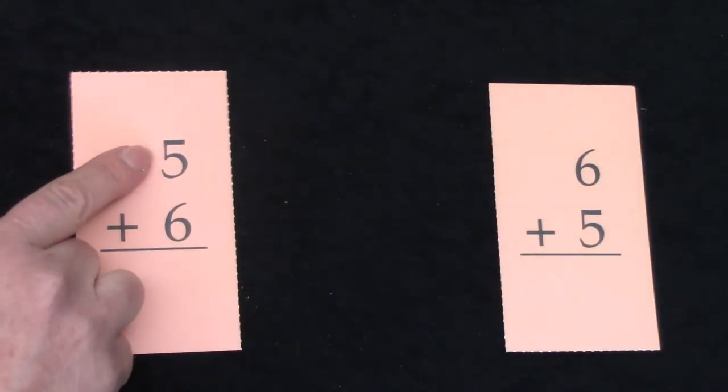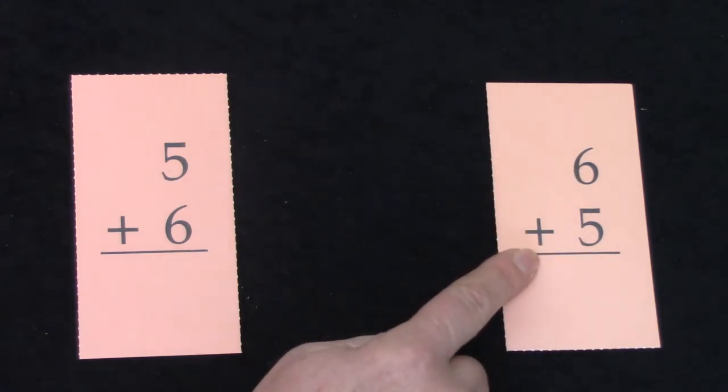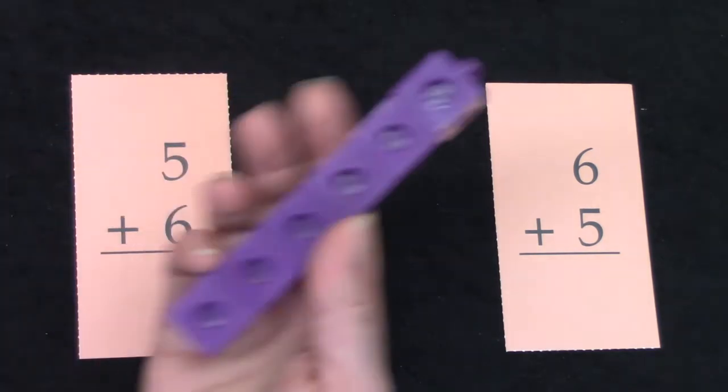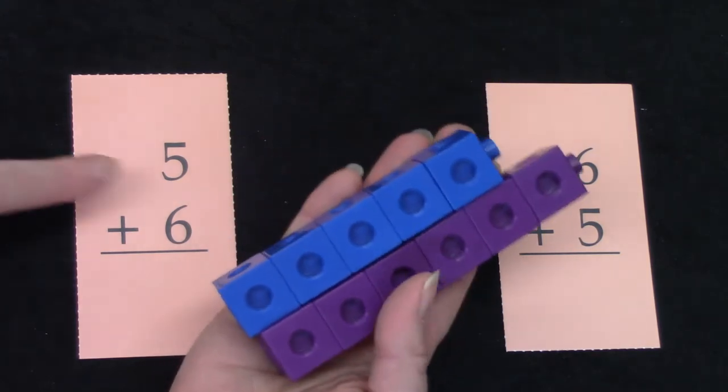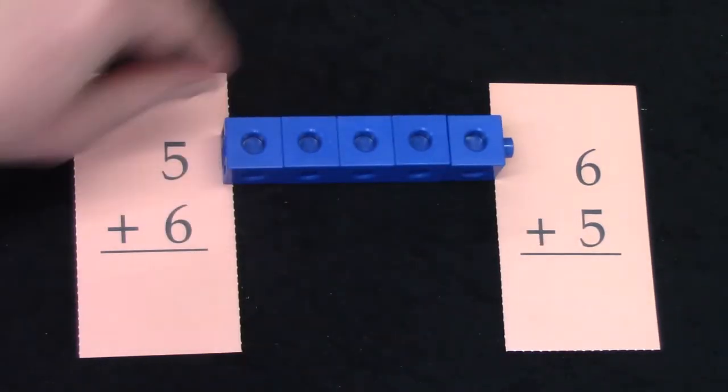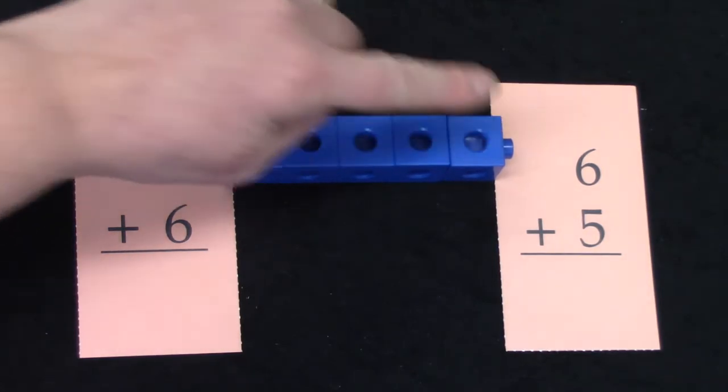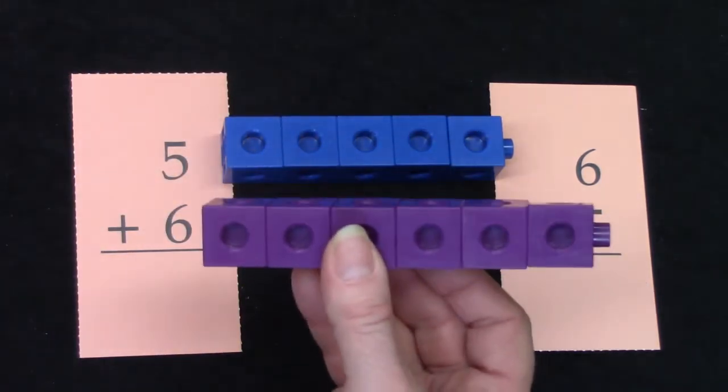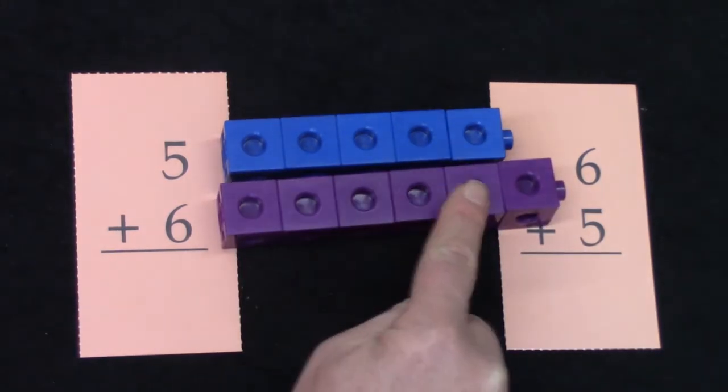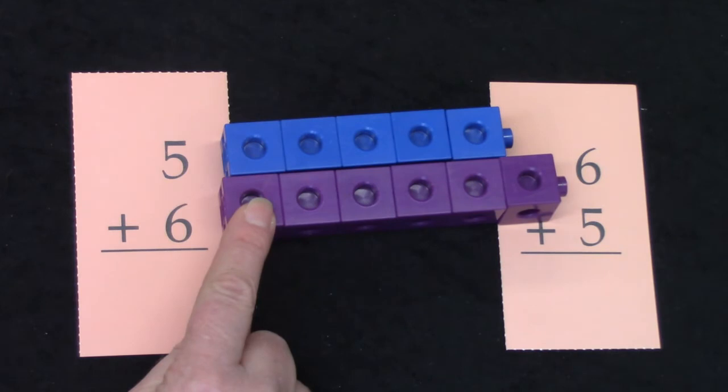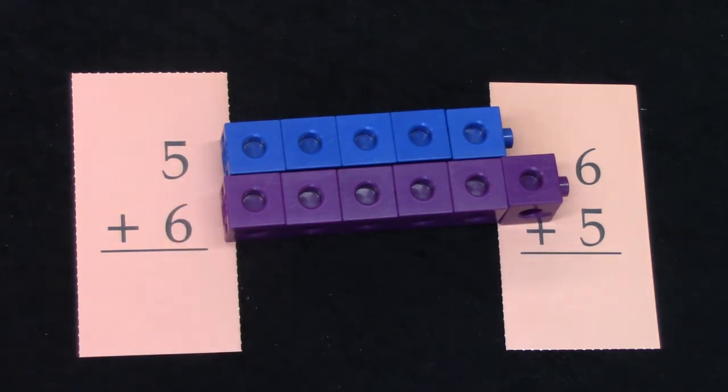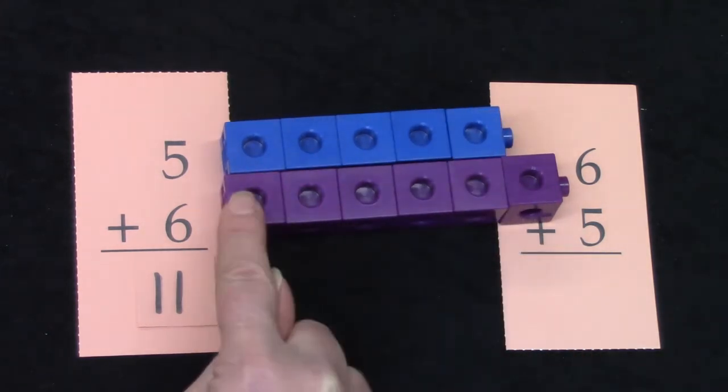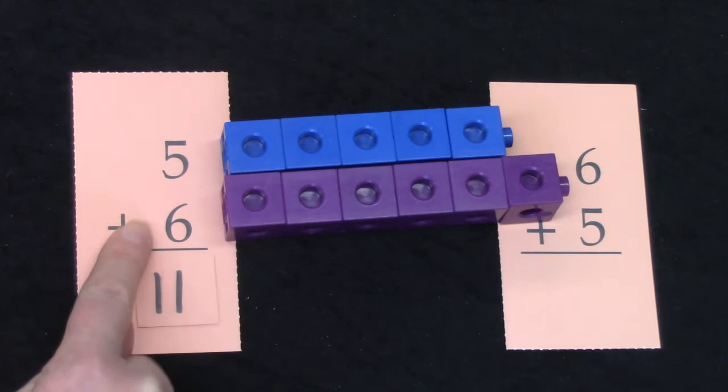Here we have the math facts 5 plus 6 and 6 plus 5. They are switcheroo facts because they both are adding a 6 and they both have a 5. Well let's do this one first. We have a 5 first. 1, 2, 3, 4, 5. And then we're going to add 6 to it. 1, 2, 3, 4, 5, 6. 5 plus 6. Well we can just take our smaller number and double it. 5 plus 5 is 10 plus one more. You're right, it's 11. Well let's count it. 5, 6, 7, 8, 9, 10, 11. 5 plus 6 is 11.